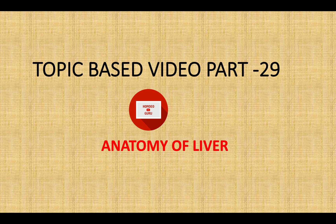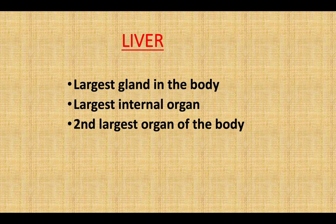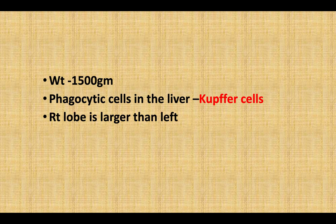Anatomy of liver. The liver is the largest gland in the body and the largest internal organ. It is the second largest organ of the body, weighing 1,500 grams or 1.5 kilograms. Phagocytic cells in the liver are called Kupffer cells. The right lobe is larger than the left.